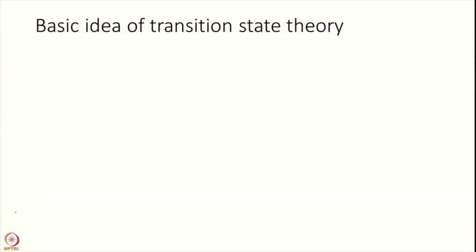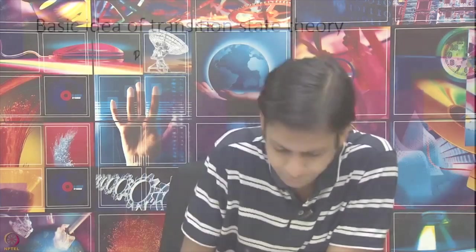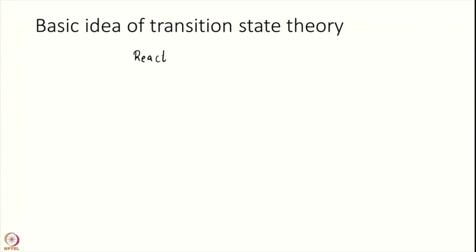What is the idea — what are we doing? Remember, in Kinetic Theory of Collisions what is really missing is the idea of chemical bonding — the whole chemistry was missing. So we want to bring that into the picture, and we are essentially going to use the intuition that Arrhenius had provided. Let us say I have some reactants going to some products — the most general reaction.